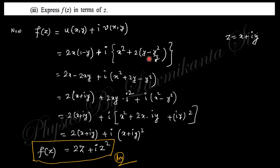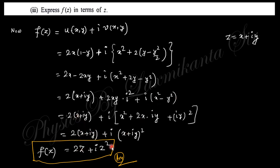Rearranging these two expressions — taking 2x and 2iy together, using i² = −1, factoring out i — you obtain x² + 2x·iy − y² = (x + iy)². Substituting z = x + iy, you arrive at f(z) = 2z + iz².